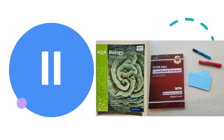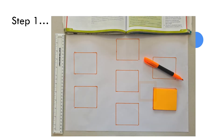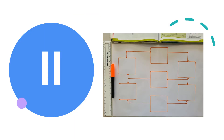Step one: draw the template of a negative feedback loop using your source of information. Include arrows and generic labels for each box. You can see what I've done in the picture on the screen. Pause now to complete.